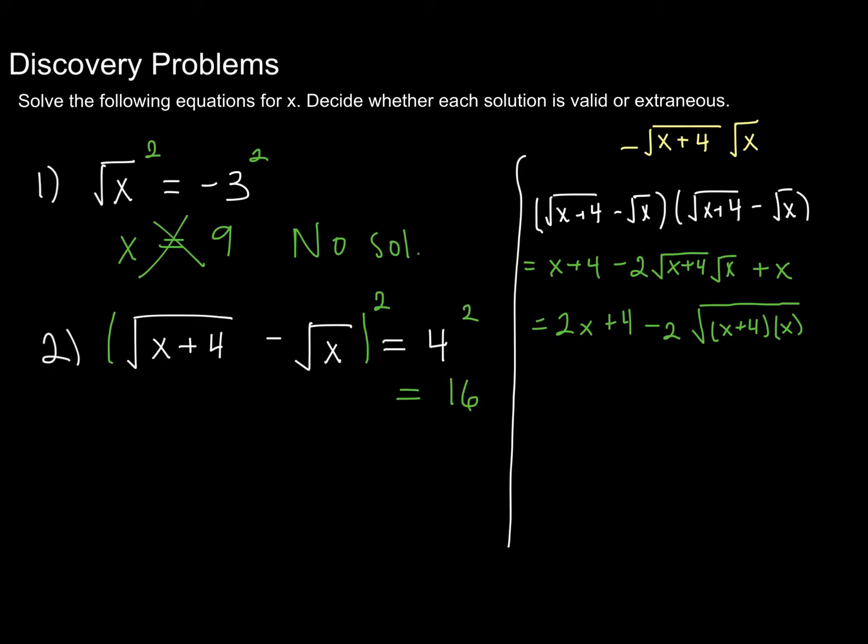So notice now I've rewritten this expression that had two radicals with only one. And so now when I come back over here, I'll simply have an equation with one radical expression, and I know how to move from there. I'm going to isolate my radical expression and solve. So the first step, I'm going to isolate my radical by subtracting 4 and 2x from both sides, and then dividing by 2.